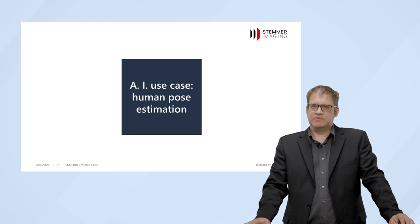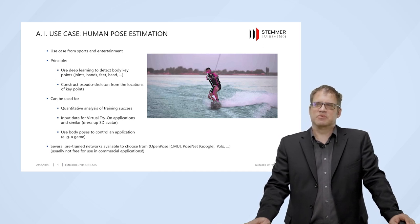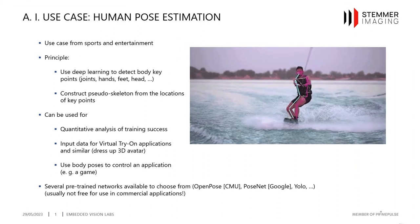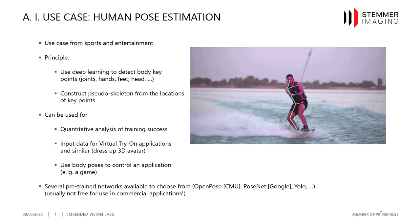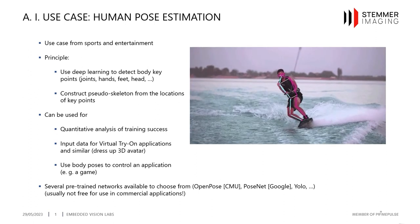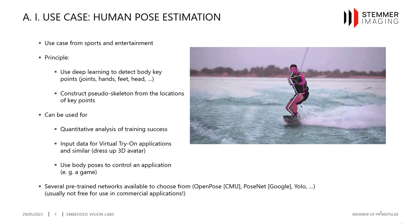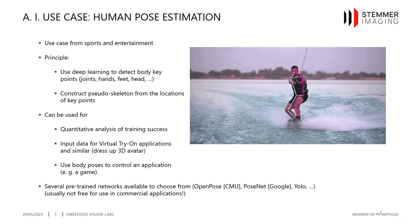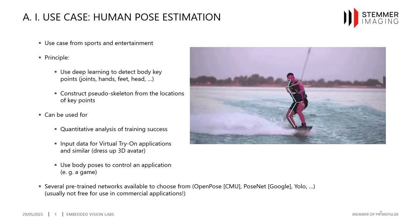Let's have a look at one possible use case of AI and deep learning: human pose estimation. What's happening is that deep learning is used to detect a few key body points like hands, feet, joints, and the head, and from the location of these body points a pseudo-skeleton is constructed. This pseudo-skeleton can be used for quantitative analysis of training success in sports — for example, analyzing a golf swing or a baseball batter's swing.